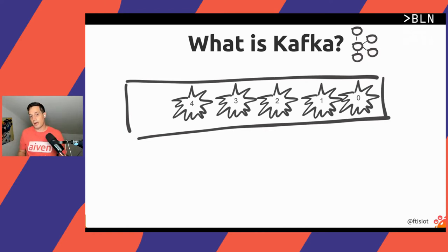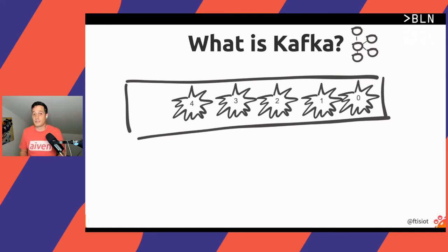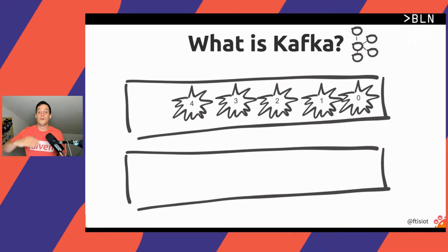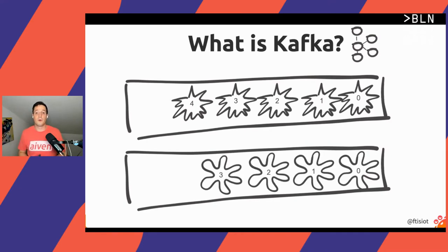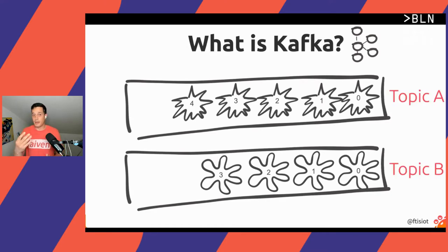Kafka allows us not only to store one type of event — it allows us to store many types of events, because events happen in different types. For example, we have pizza orders and we can have delivery positions. So we store pizza orders in one log and delivery positions in another log. Those logs in Kafka terms are called topics.